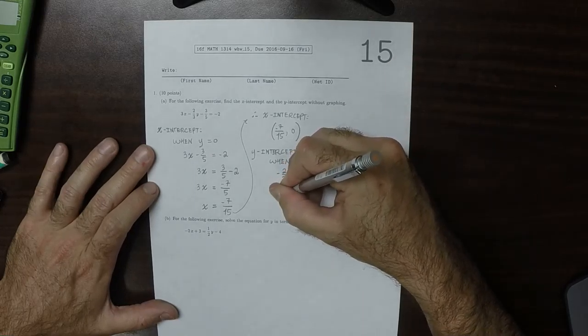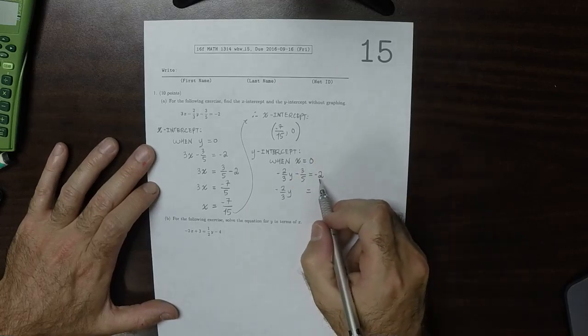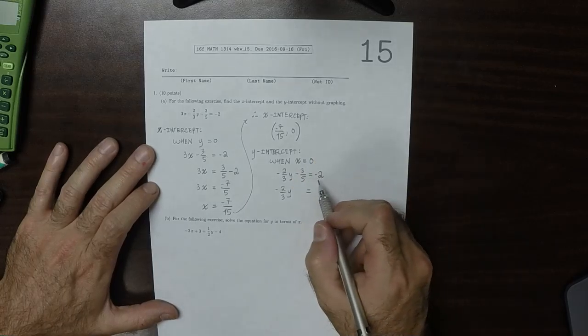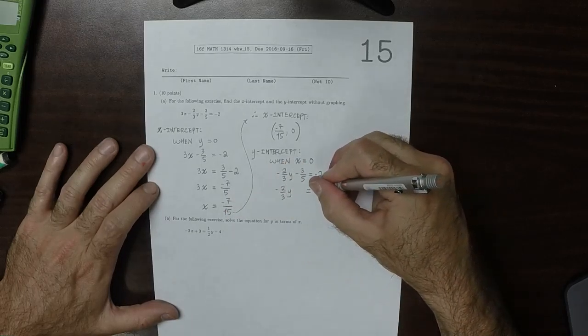So that would be negative 2/3 y is equal to, well, we already added 3/5 to negative 2 and found that to be negative 7/5.